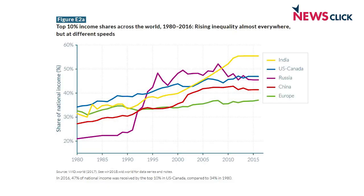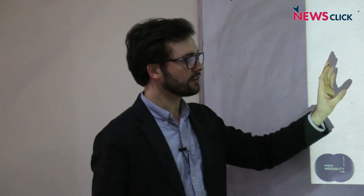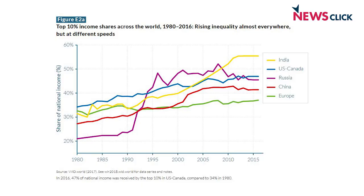Where do we come from? Let's look at the evolution since 1980, looking at the top 10% income share. We look at India in yellow, USA and Canada in blue, Russia in purple, China in red, and Europe in green. We see these diverging trajectories since 1980 — low inequality at the beginning of the period, high inequality at the end. Russia was the most equal country around 1990 during the Soviet period, and then in just five years became the most unequal country in this subset — a very brutal shift out of the Soviet economy.